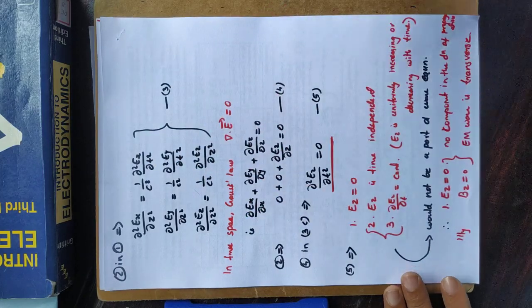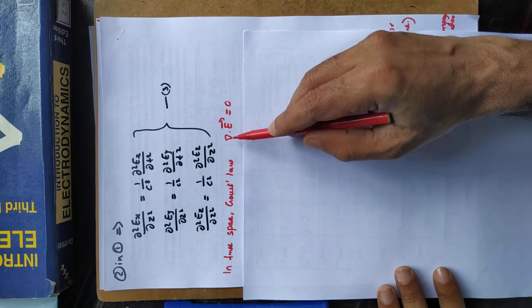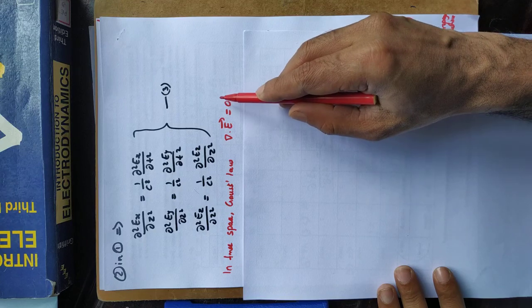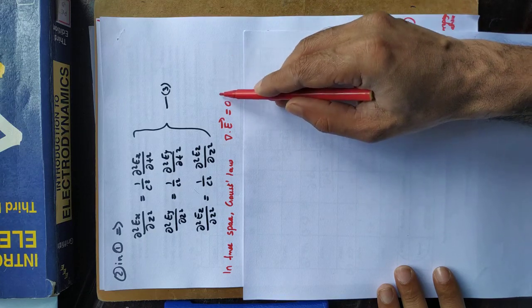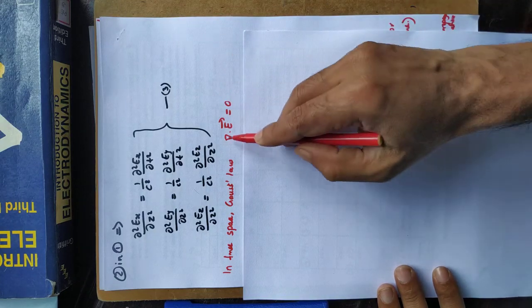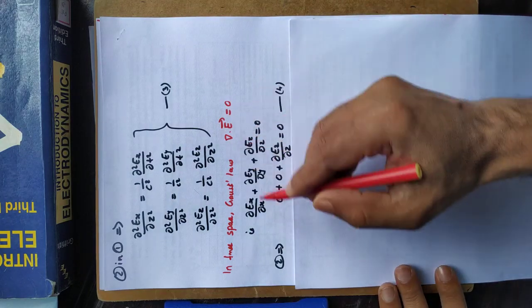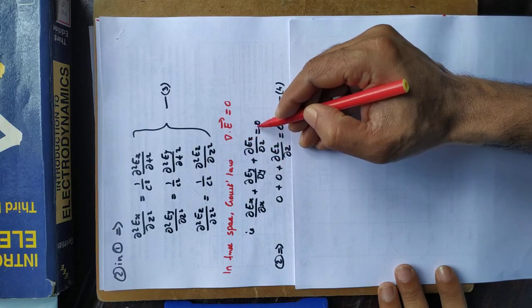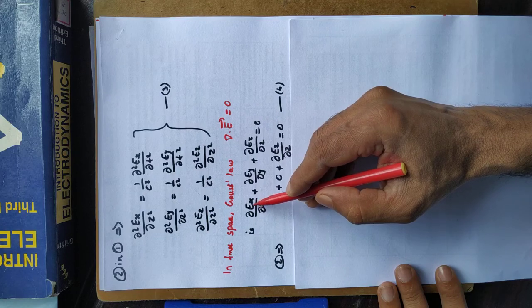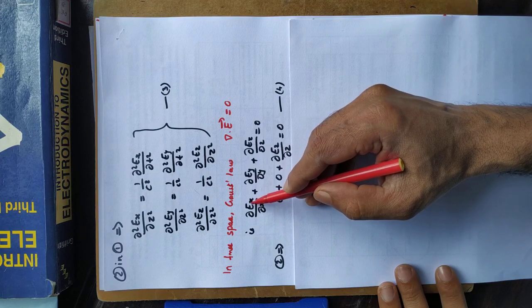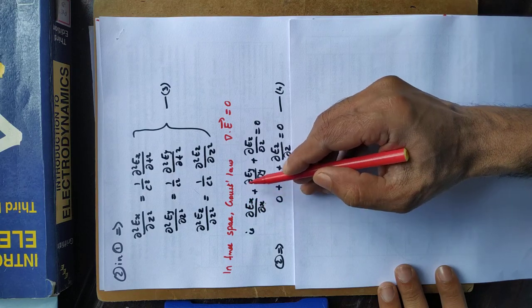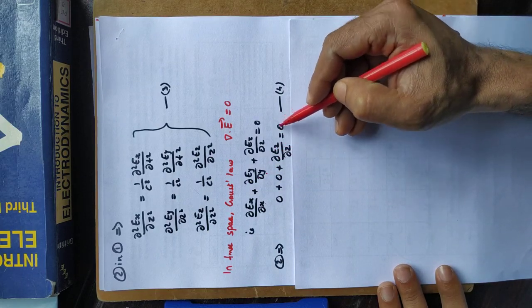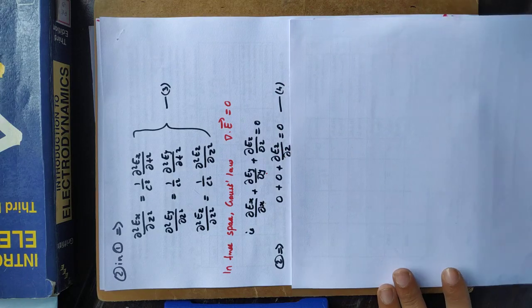In free space, Gauss's law gives del·E = 0, since ρ = 0. Expanding: ∂Eₓ/∂x + ∂Ey/∂y + ∂Ez/∂z = 0. Since we are considering a plane wave propagating in the z direction, derivatives with respect to x and y are zero, which implies ∂Ez/∂z = 0. This is equation four.